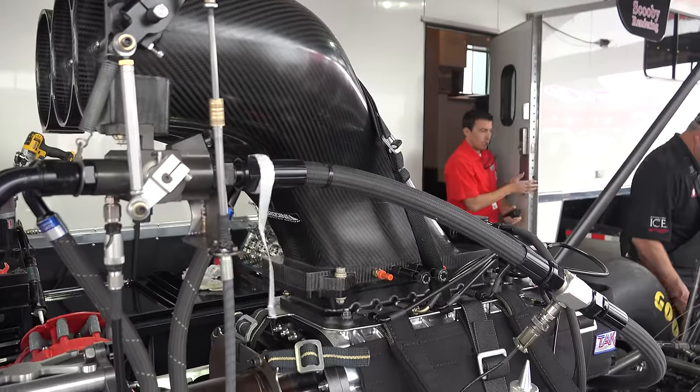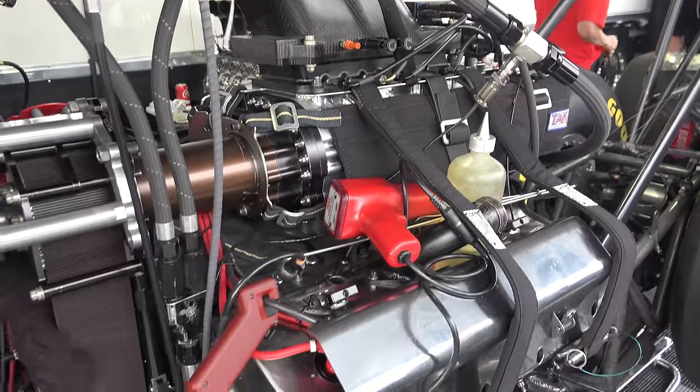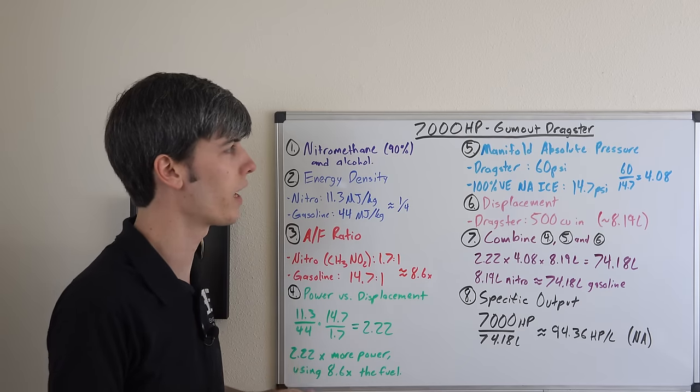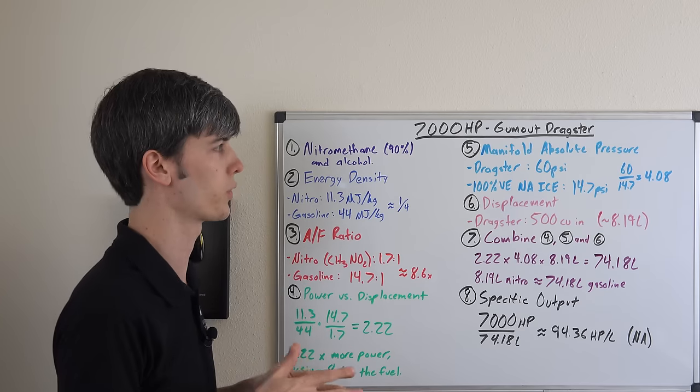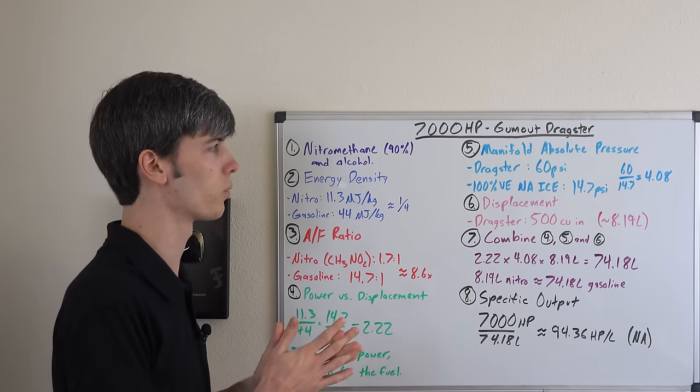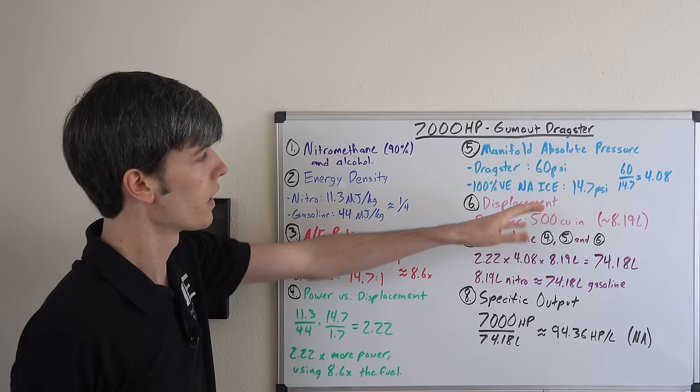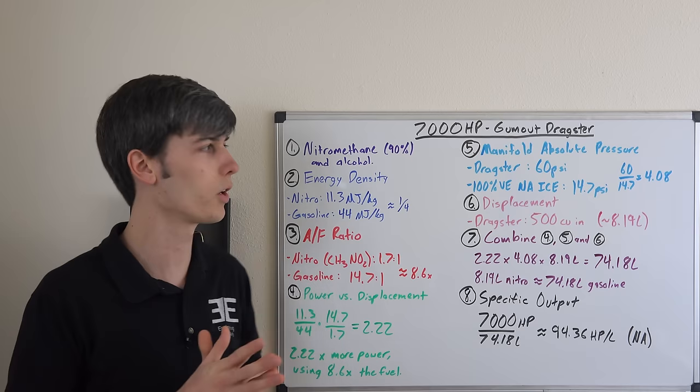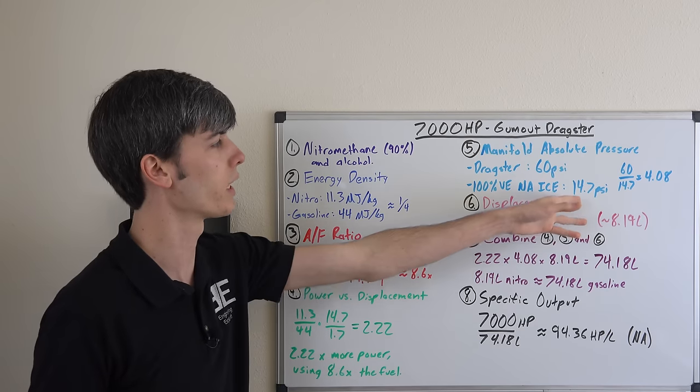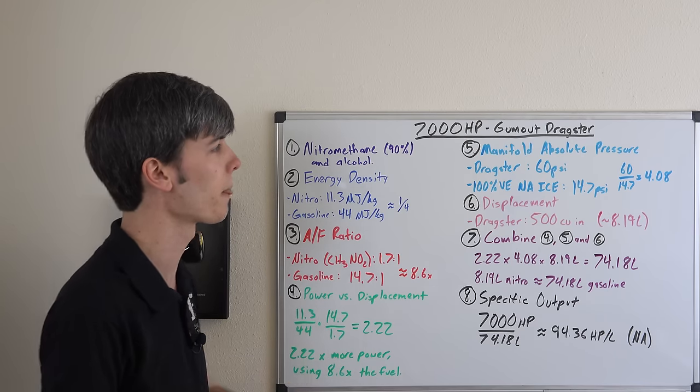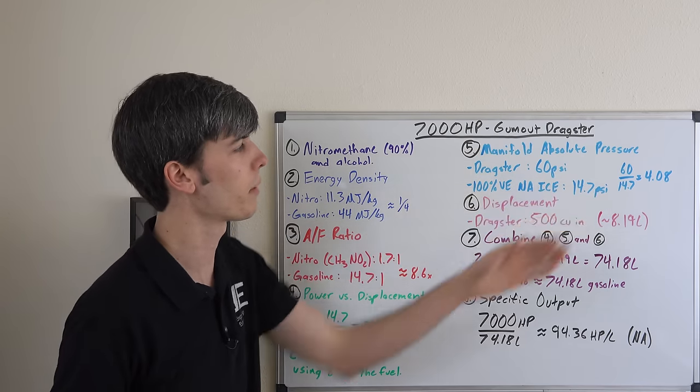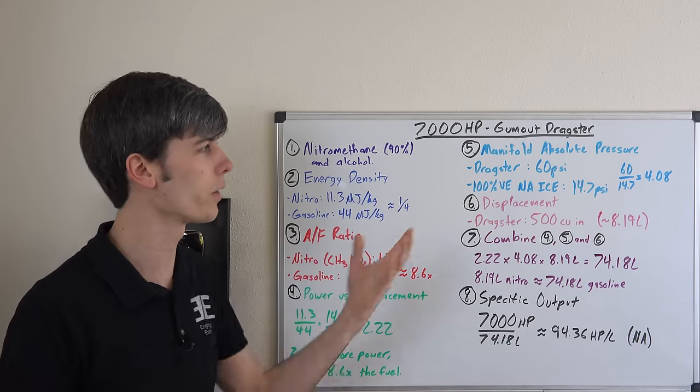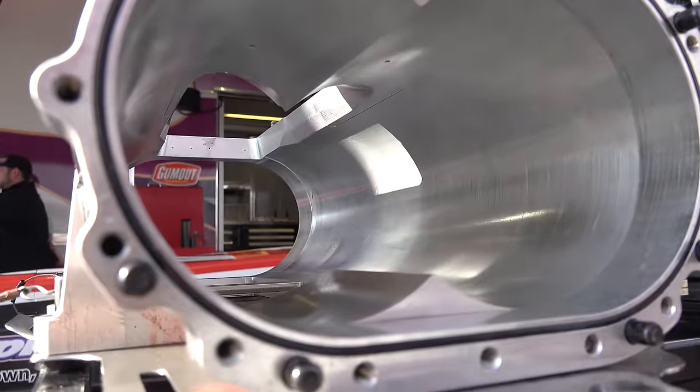Okay now let's move on to the manifold absolute pressure. These dragster cars can run up to about 60 psi manifold absolute pressure and this is towards the end of the run. If we were to compare this to a naturally aspirated gasoline engine running at 100% volumetric efficiency that'd be pulling in about 14.7 psi so if we take 60 divided by 14.7, 4.08 times the amount of air going into this because it is supercharged.